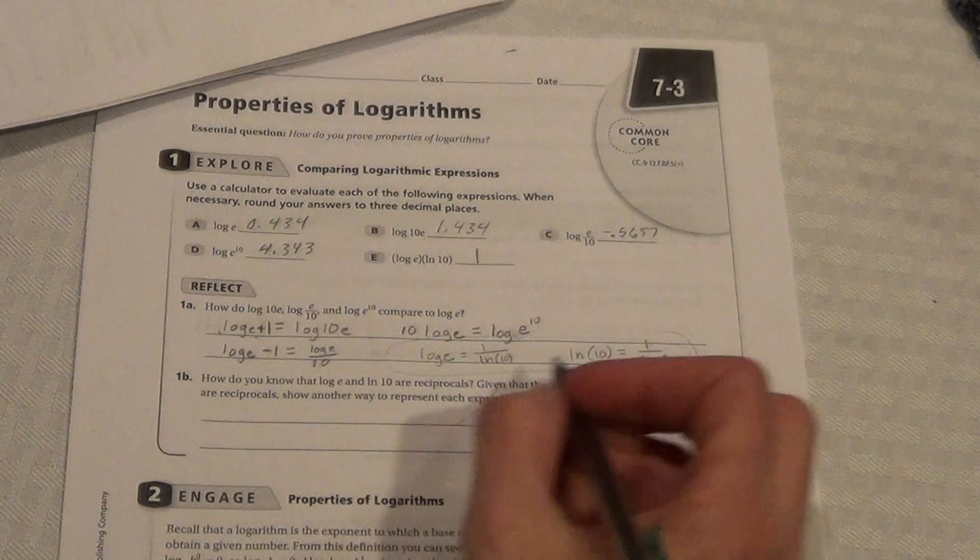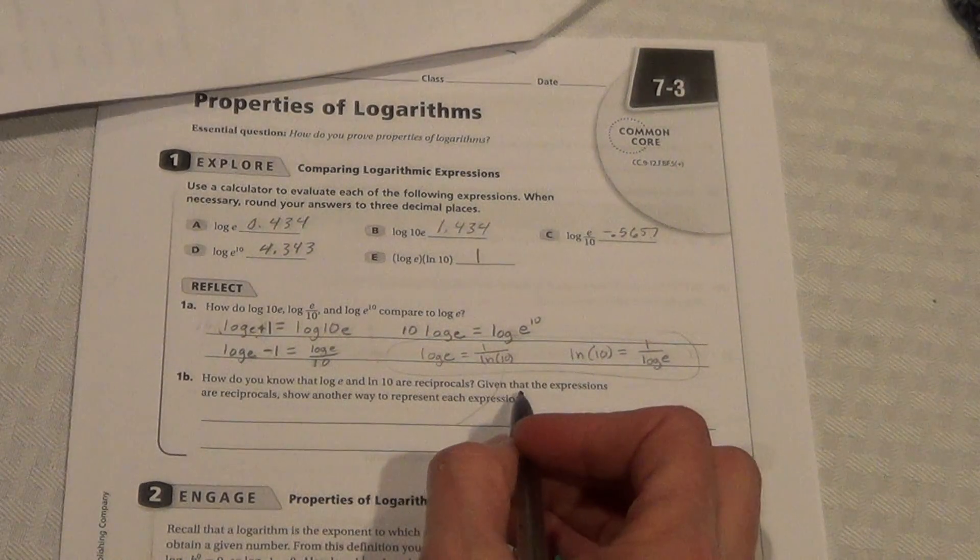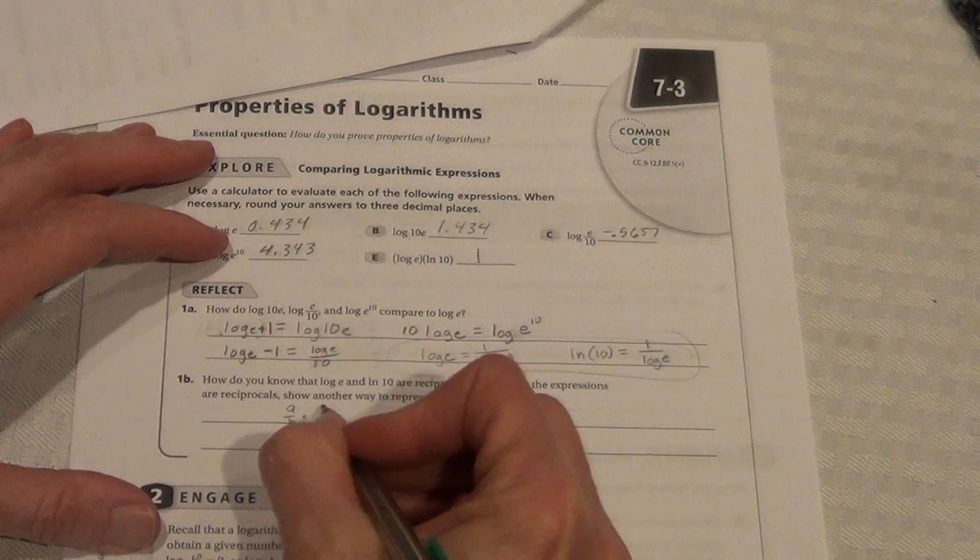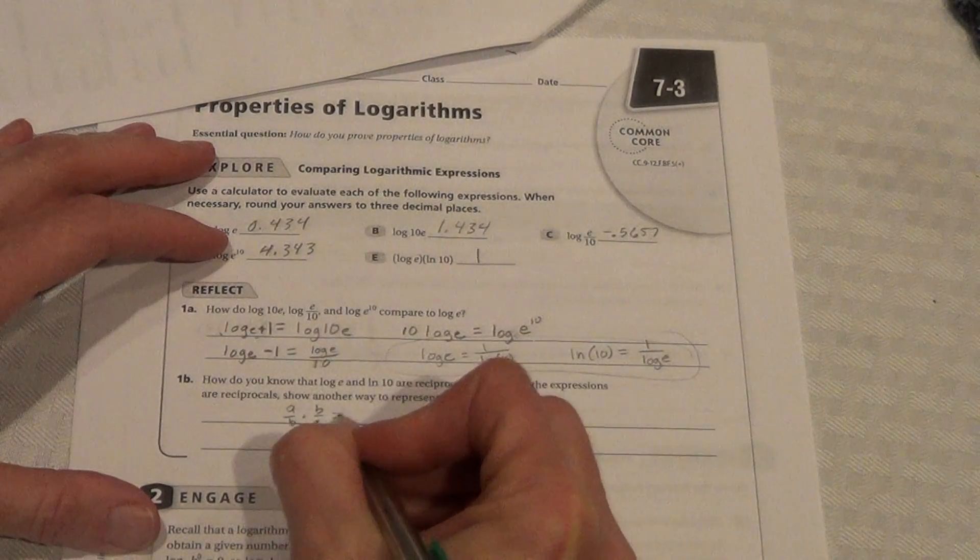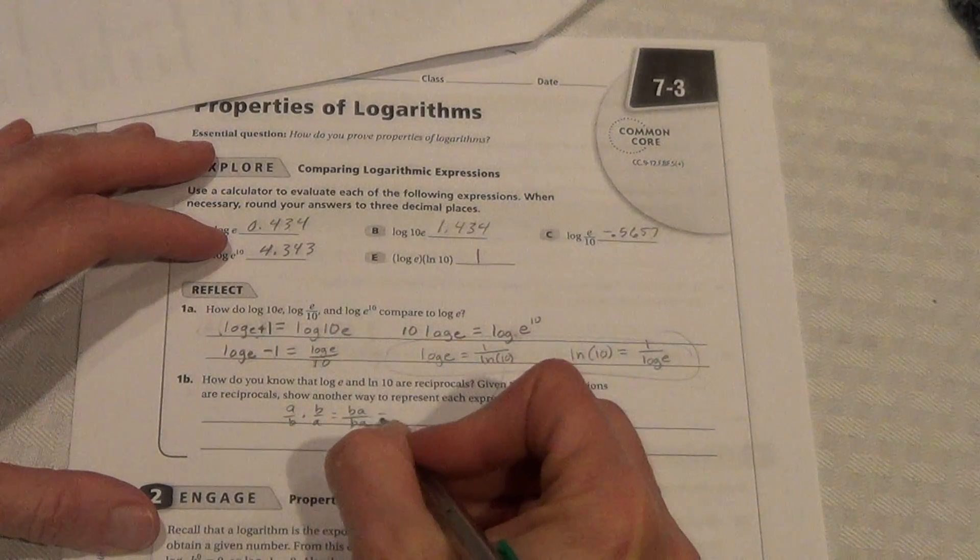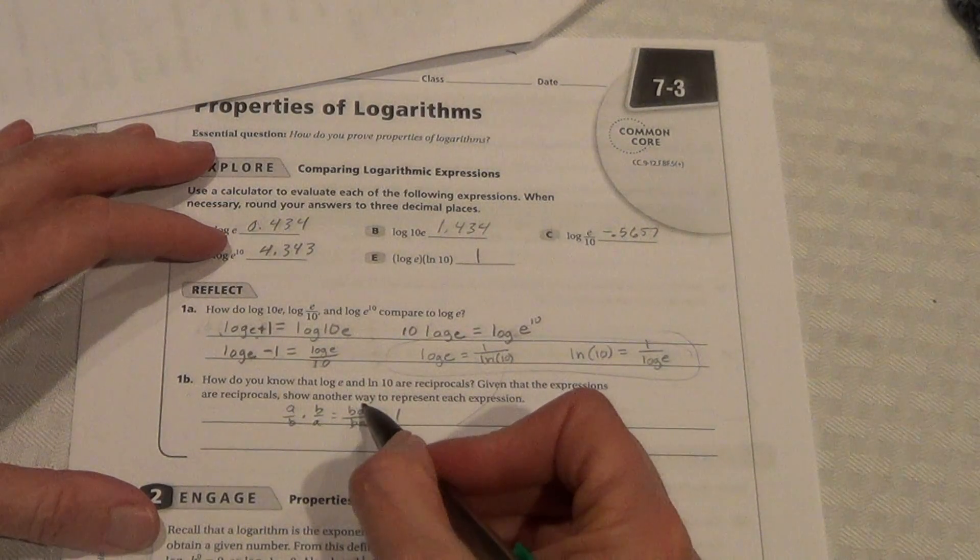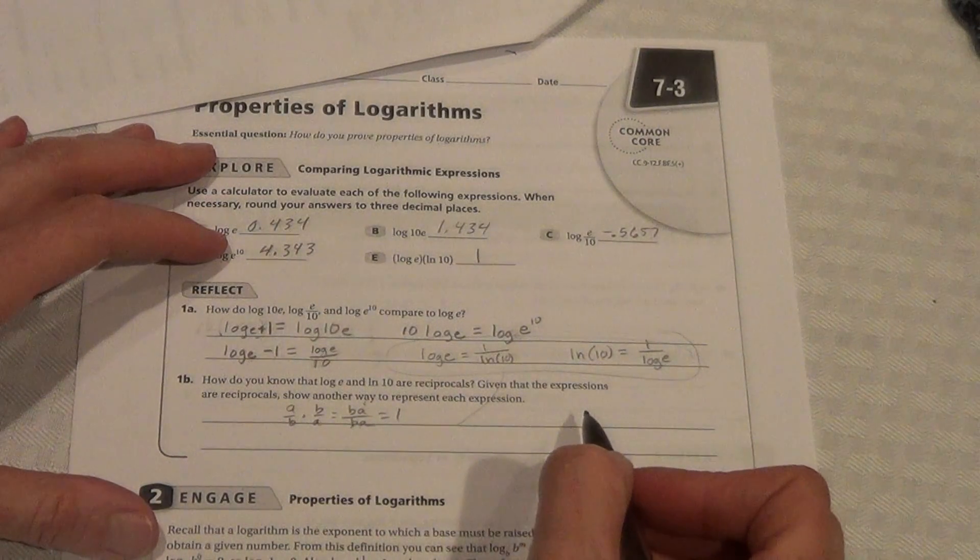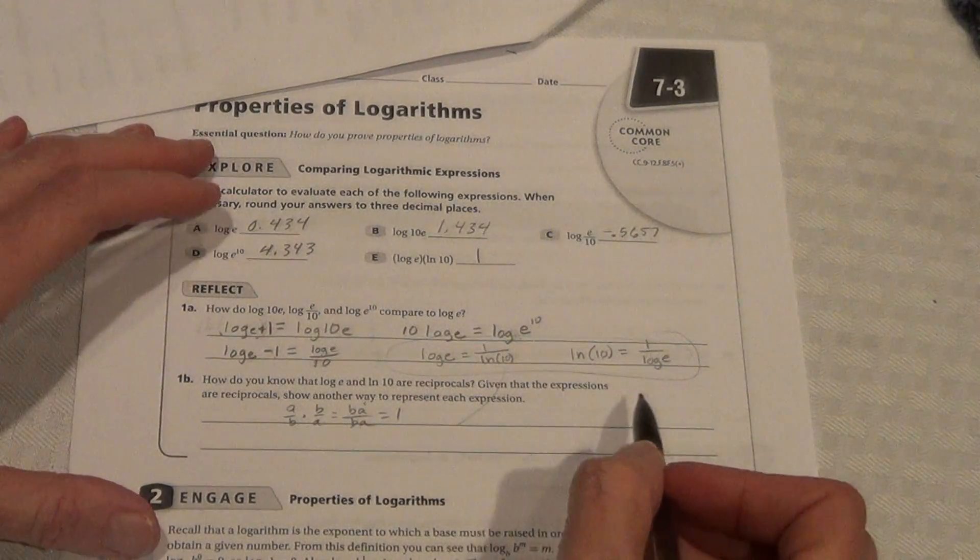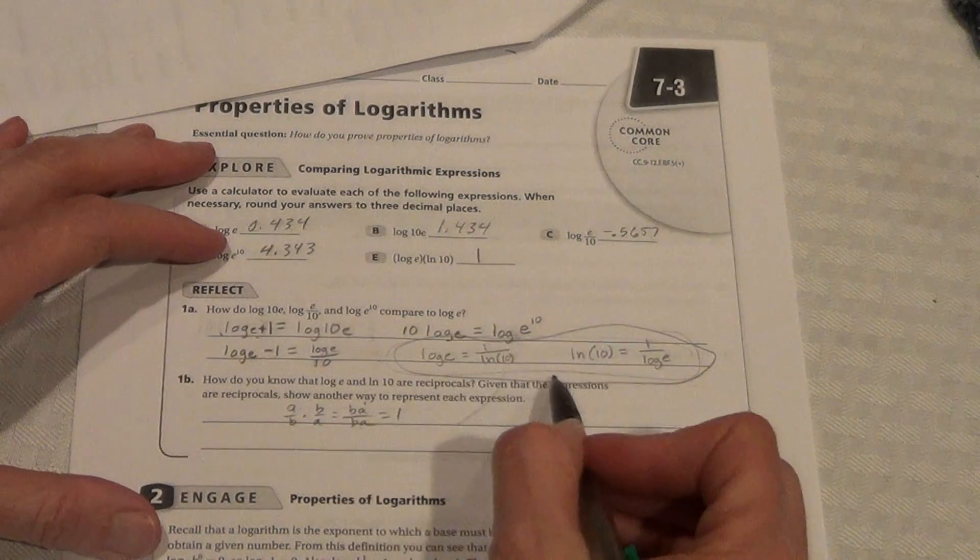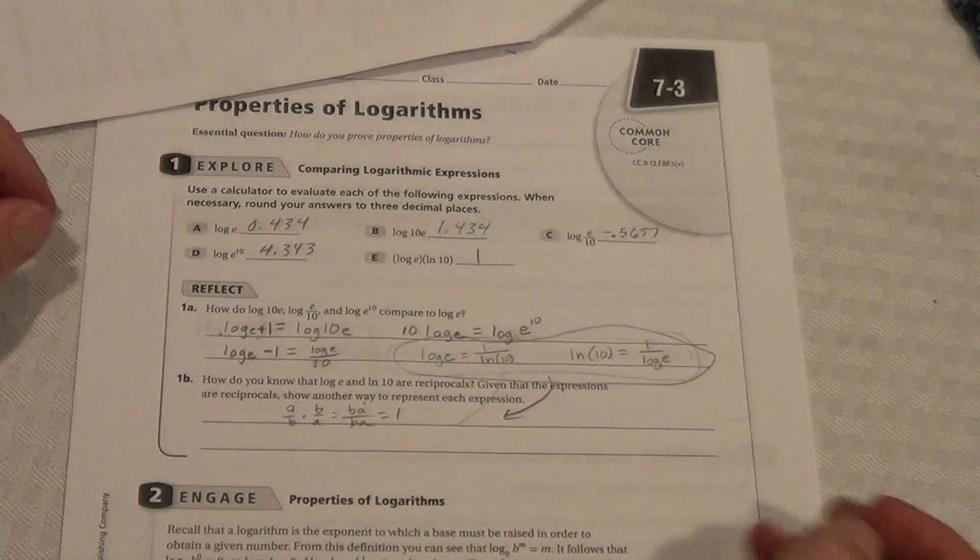How do you know that log e and ln 10 are reciprocals? Well, it is because a over b times b over a equals ba over ba, which equals 1. The only way to get the same number on the top and the bottom is if they're reciprocals. So, this actually answers this. That's how we would show them in reciprocals.